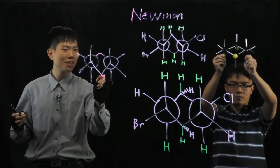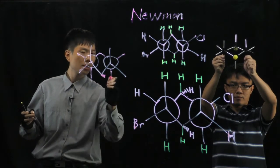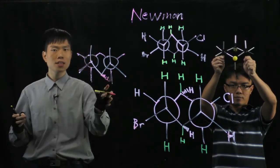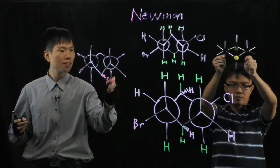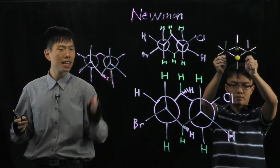So I draw a wedge bond. A solid triangle. And then I put Cl here.